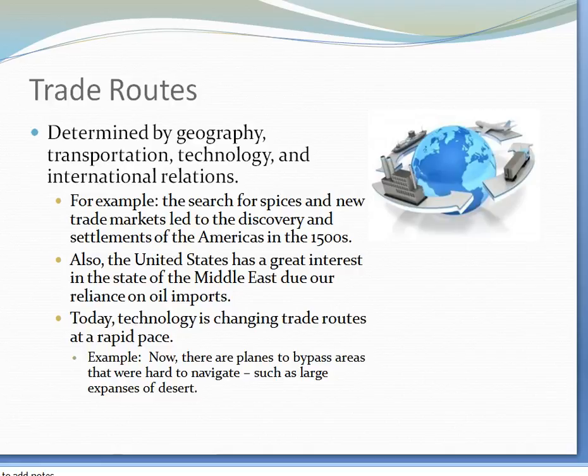Let's turn to trade routes. Trade routes are determined by geography, and they facilitate transportation, technology, and international relations. For example, the search for spices in new trade markets led to the discovery and settlements of the Americas in the 1500s. Also, the United States has a great interest in the state of the Middle East due to our reliance on oil. Today, technology is changing trade routes at a rapid pace — now there are planes to bypass areas that were hard to navigate previously, such as large expanses of desert.